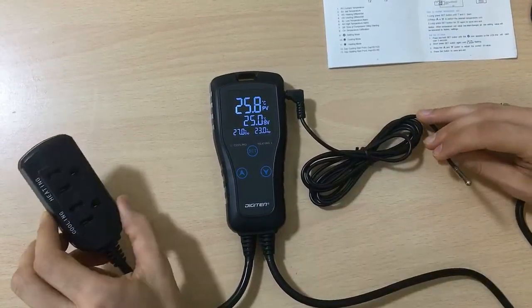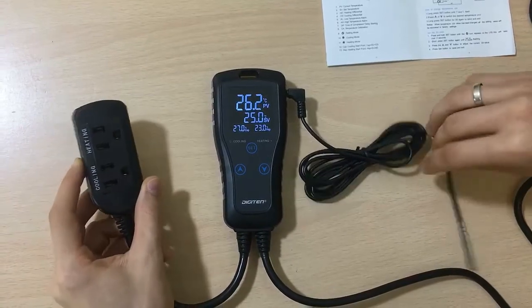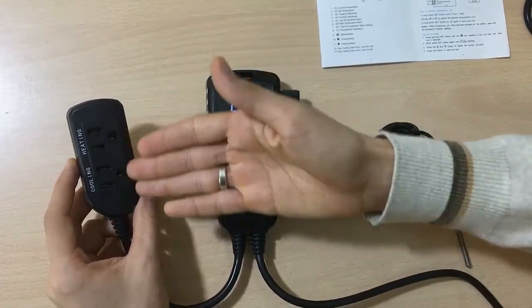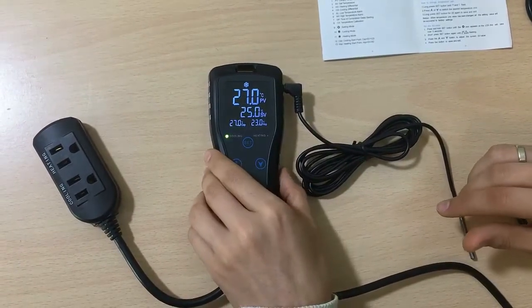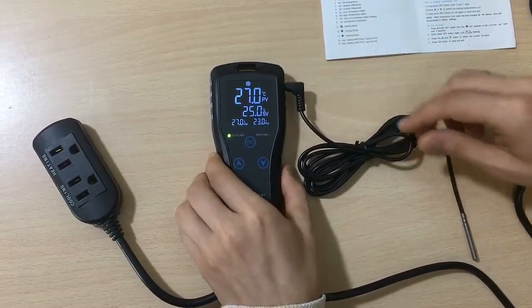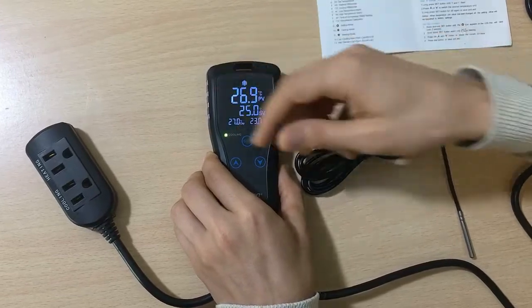The second part is an output which is connected to heating or cooling equipment. And the third one, the most important thing, is the LED screen with all the information.